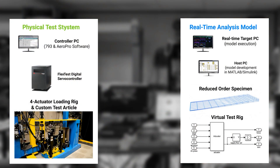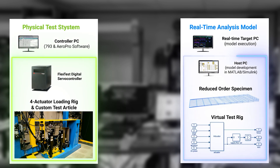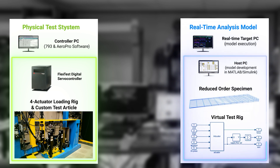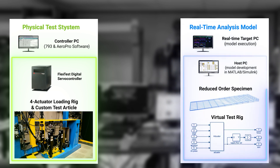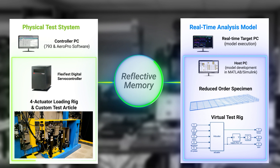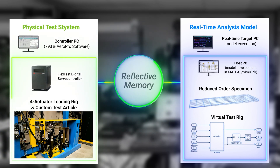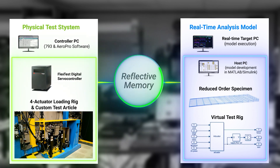The analysis model comprises a reduced order specimen model and virtual test rig running in parallel with the physical system. The model predicts the state of the physical system at the next control step, then calculates the valve commands needed to correct errors. These commands flow to the physical system via high-speed reflective memory and play out on the rig. Force and displacement signals flow back to the model, and the process repeats for each clock tick.